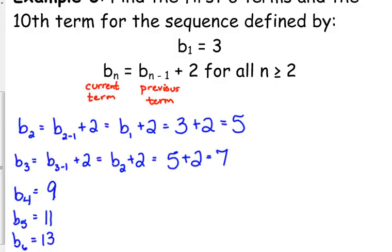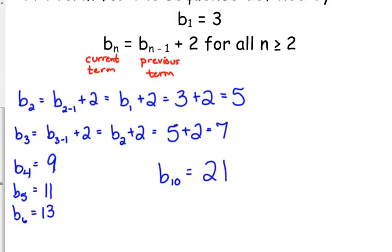And so, then the 10th term, let's see here, b sub 7 would be 15, 8 would be 17, 9 would be 19, so 10 is 21. Questions about the notation because that's usually what kind of trips people up is the notation, the subscripts and things like that. Make sense?